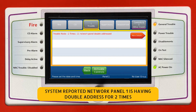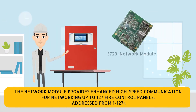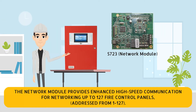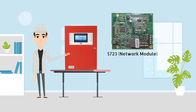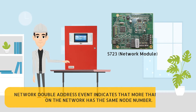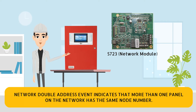The system reported that network panel 1 is having a double address for two times. The network module provides enhanced high-speed communication for networking up to 127 fire control panels, addressed from 1 to 127. A network double address event indicates that more than one panel on the network has the same node number.